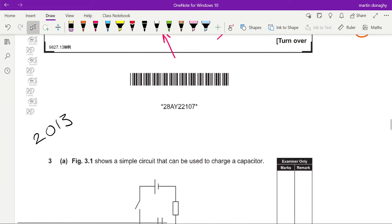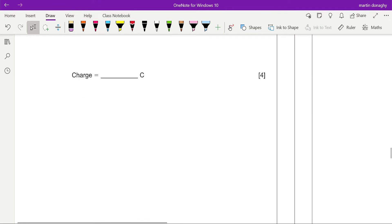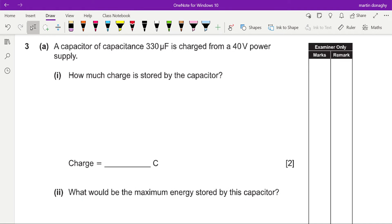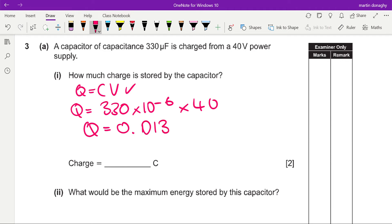Let's look at the 2014 paper on capacitance. A 330 microfarad capacitor is charged from a 40 volt supply. How much charge is stored in the capacitor? We just do Q equals CV, and there'll be a mark for that. The only mistake people are going to make here is to forget about 10 to the minus 6. Multiply it by 40 and that gives you 0.0132 coulombs.